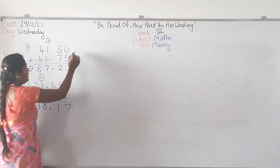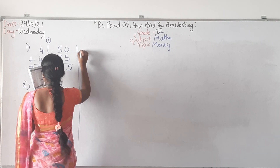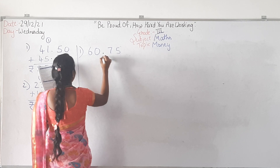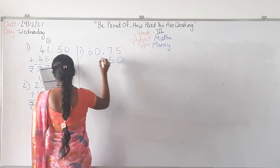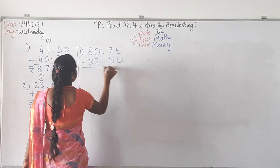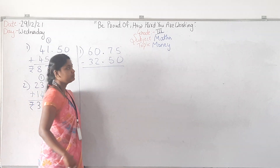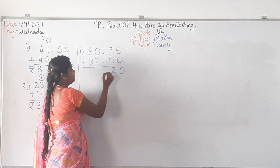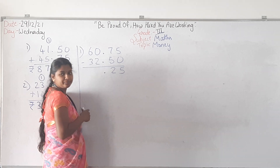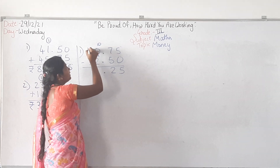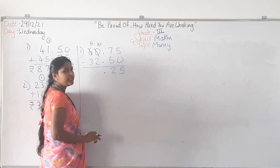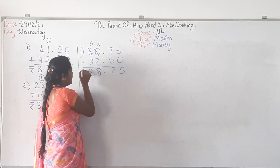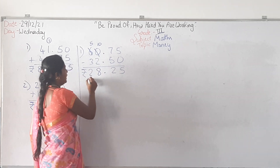This is how we do addition. Now, when it comes to subtraction. 60.75 minus 50.23. What is 5 minus 0? 5. 7 minus 5 is 2. 0 minus 2 — can you do? No. You take borrow. This will become 10 and this will be reduced to 5. 10 minus 2 is 8. 5 minus 3 is 2. That is rupees 28.52.